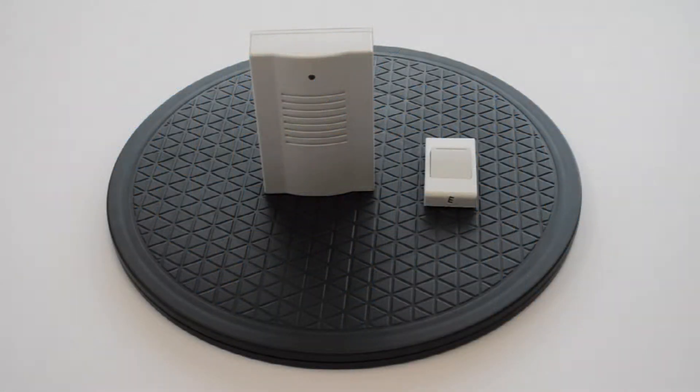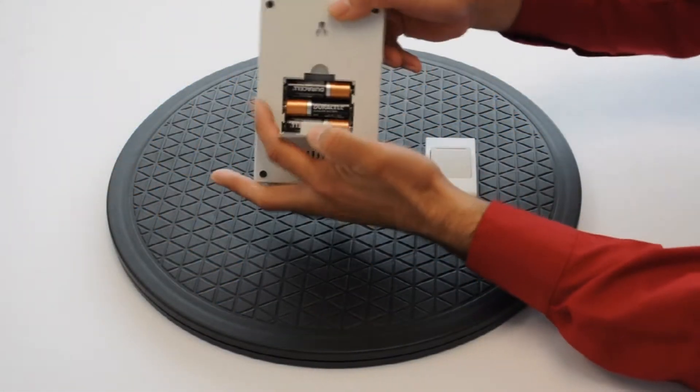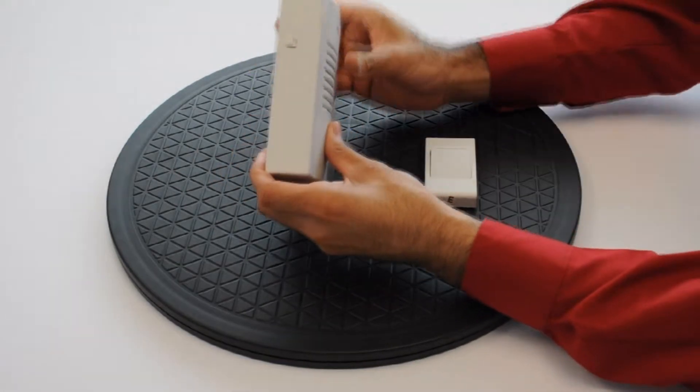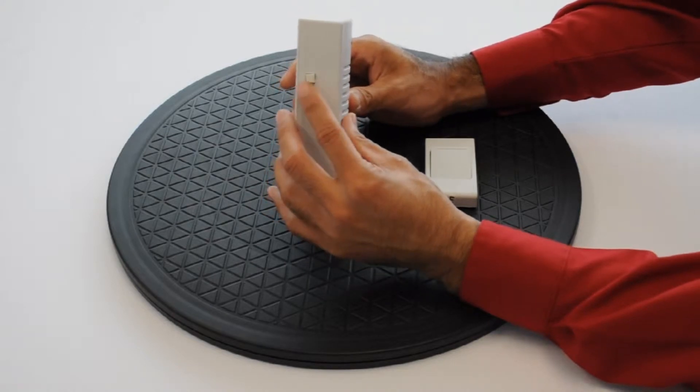To operate the wireless doorbell, simply install three AA batteries, select the desired ringtone from the 16 different ringtones offered.